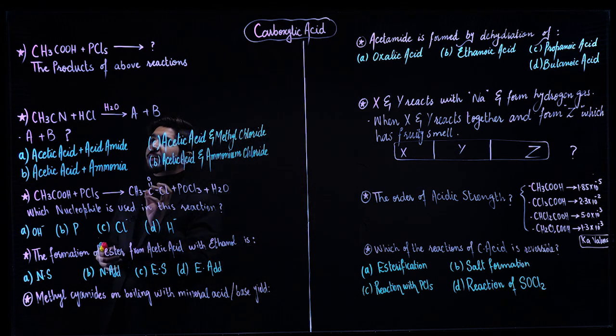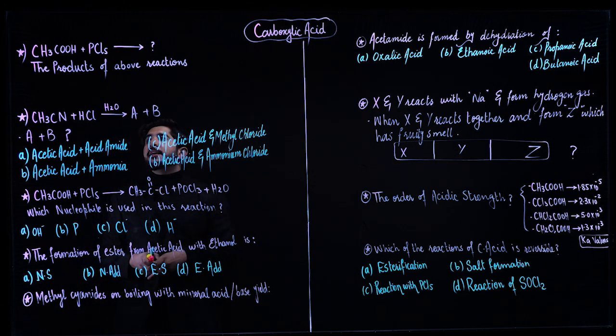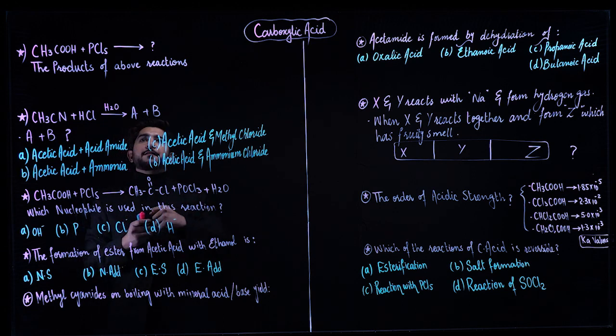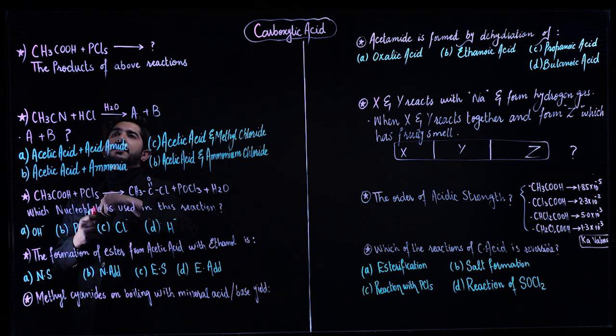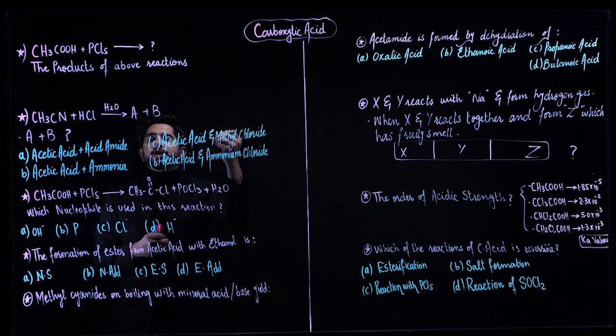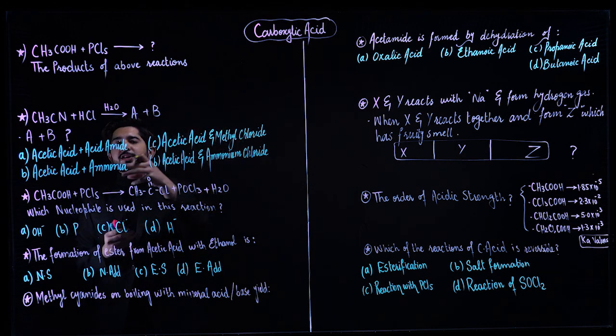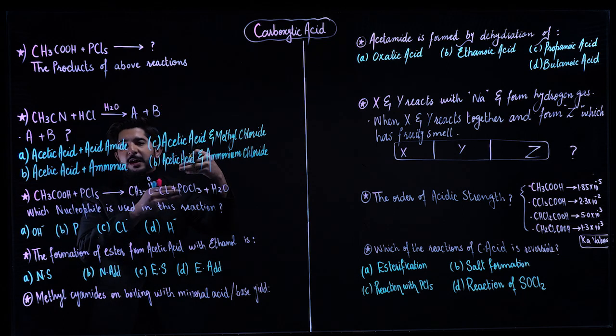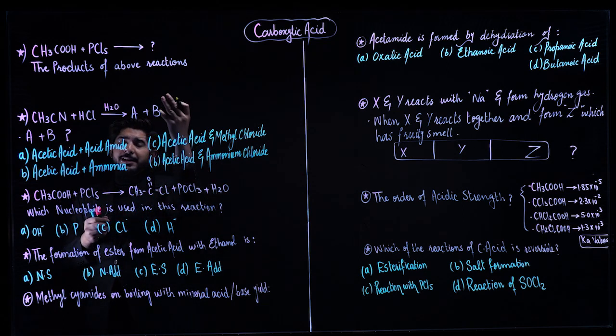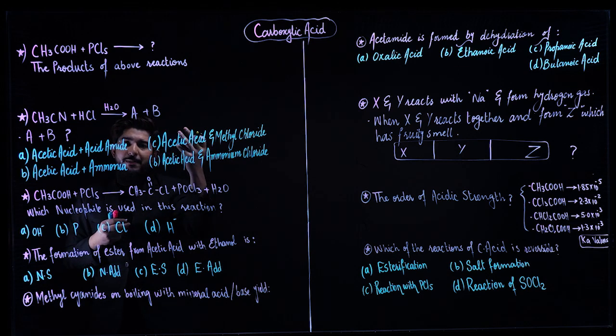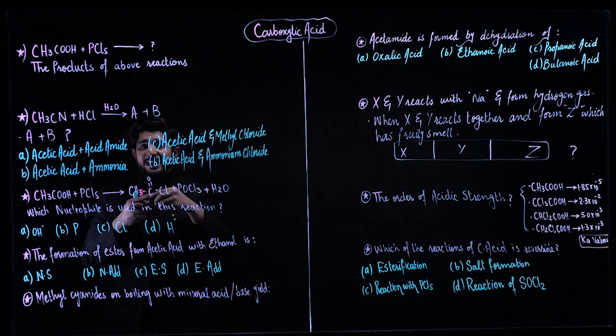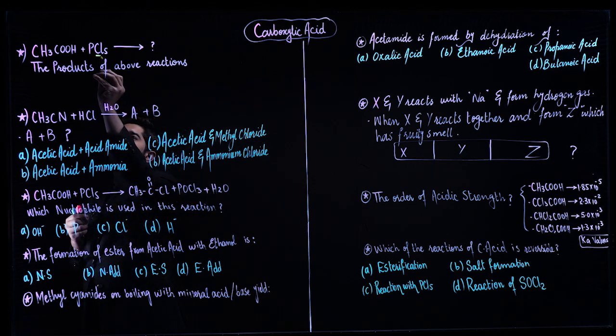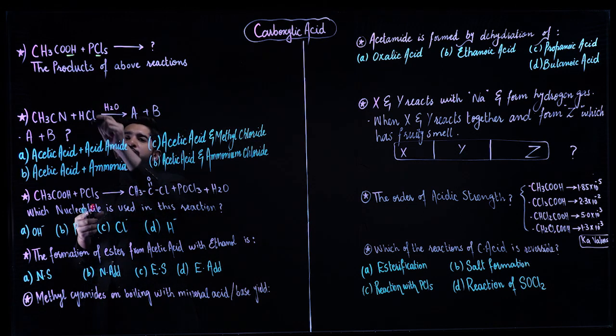Let's start from the first question: CH3COOH, that is ethanoic acid, when it reacts with PCl5, what are the products? The reagent and product we have to mention. If you remember the equation and mechanism, we can easily identify the products.